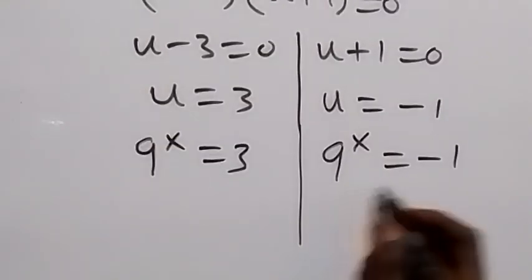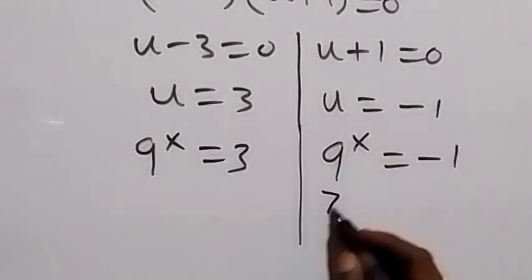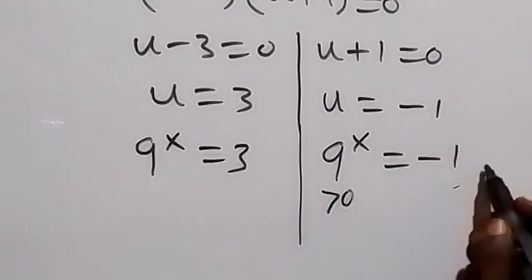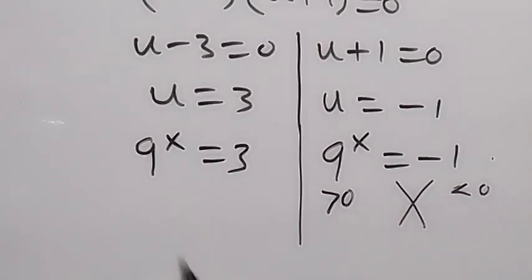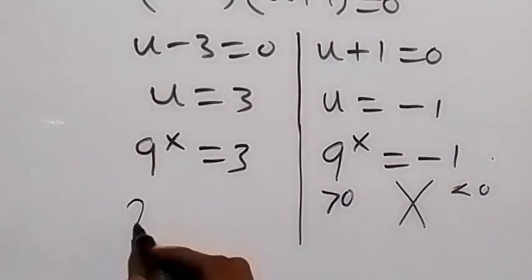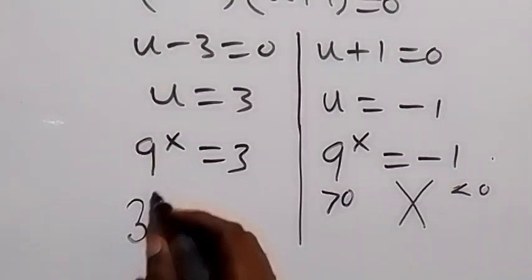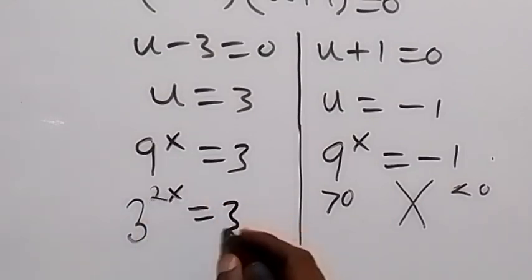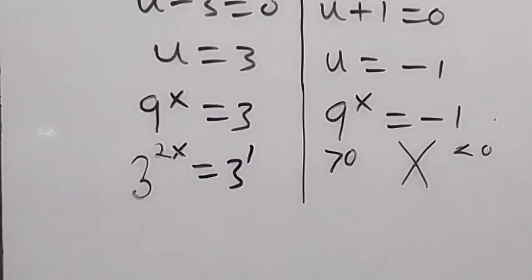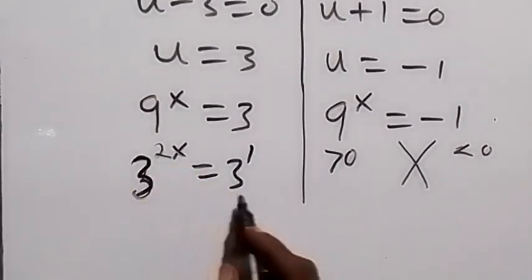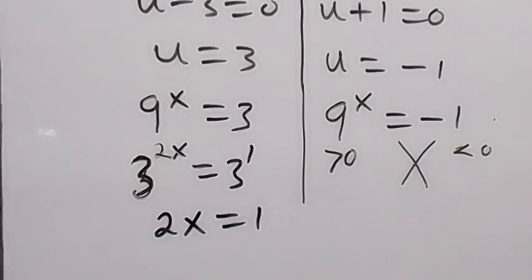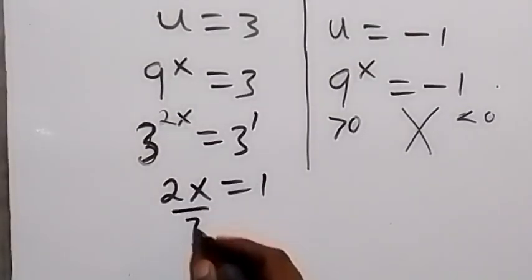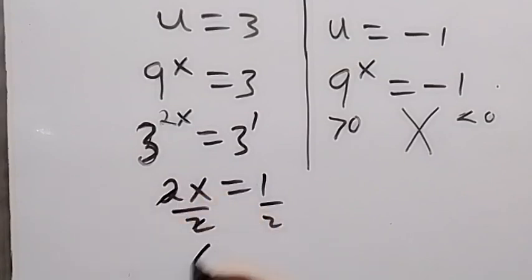When you look at this, 9 raised to power x will always be positive — that is, a number greater than 0. And here we have a number less than 0, so that means we can't have a solution here. Then, on this side, we can express 9 as 3 raised to power 2, and that will be 3 raised to power 2x, which is equal to 3 raised to power 1. And from here, the bases are equal — we have 3 as the base — so we can equate the powers. We have 2x equals to 1. Then, dividing both sides by 2 to get x, we have x equals to 1 over 2, which is x equals to one half.